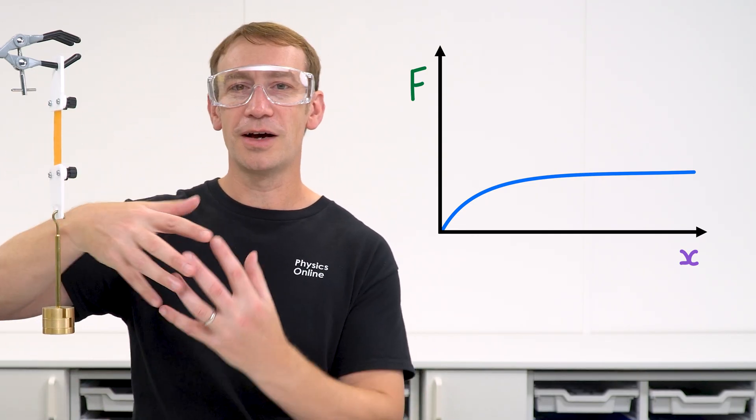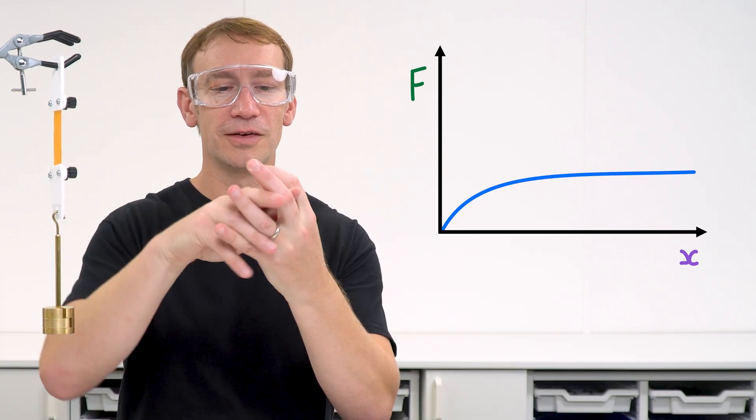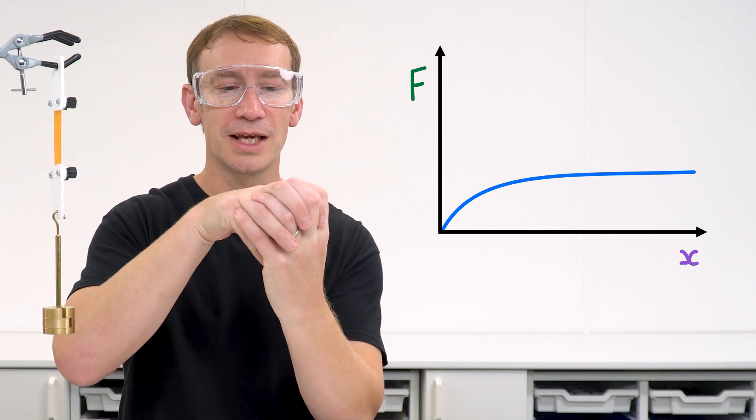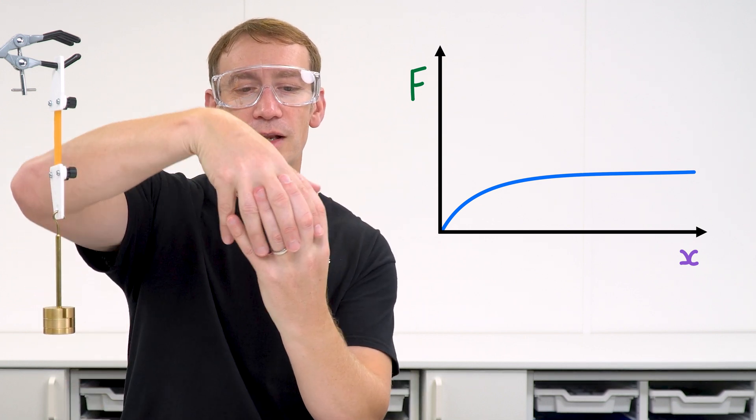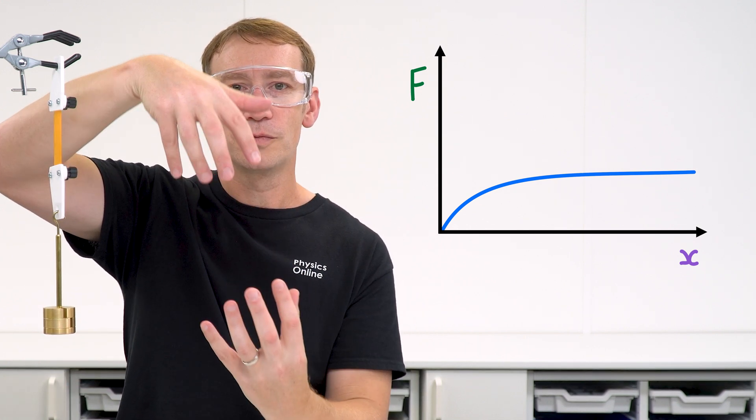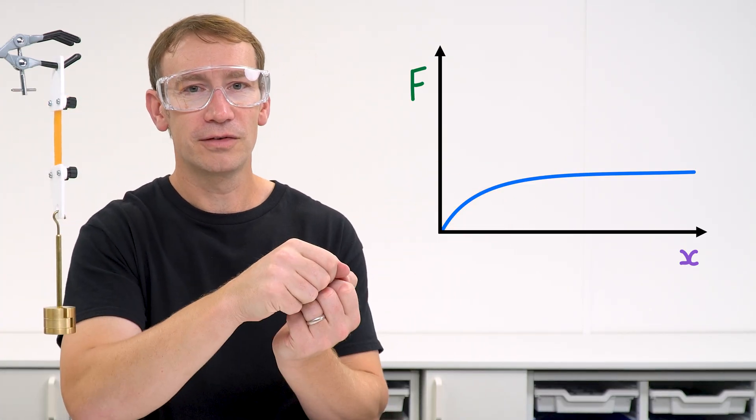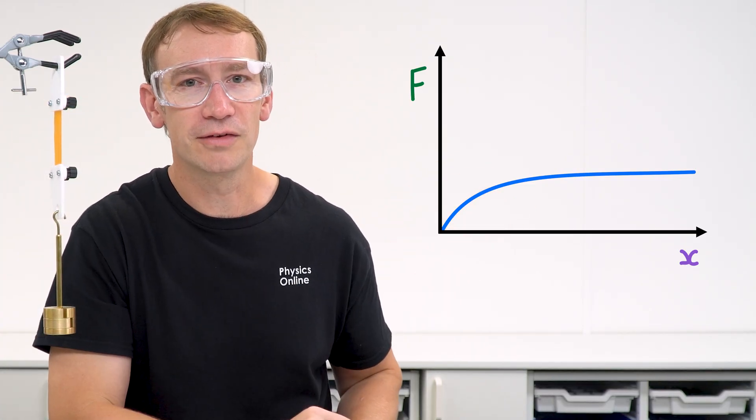What's actually happening inside is we have these chains of long polymers which are all jumbled together and they all start to align and then we get this long region here that you can see on the graph where everything starts to pull before it finally breaks.